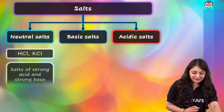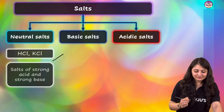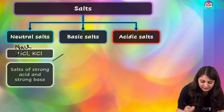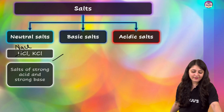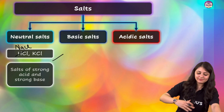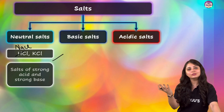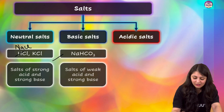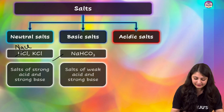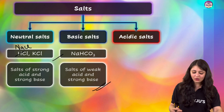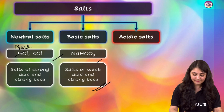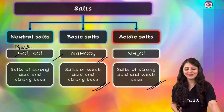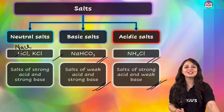To summarize: neutral salts like NaCl and KCl — here both the acid and base are strong. When both are strong, you get a neutral salt. For basic salts, the base is strong but the acid is weak. For acidic salts, the acid is strong but the base is weak.